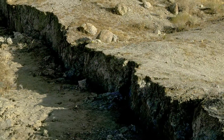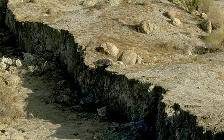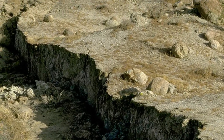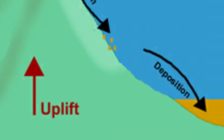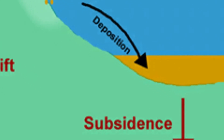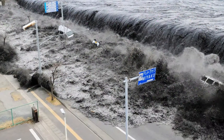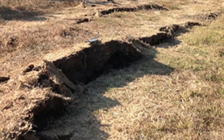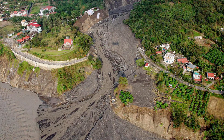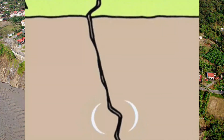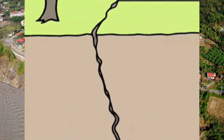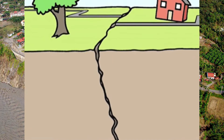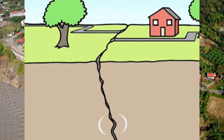The environmental effects include surface faulting, tectonic uplift and subsidence, tsunamis, soil liquefaction, ground resonance, landslides, and ground failure — either directly linked to a quake source or provoked by the ground shaking.